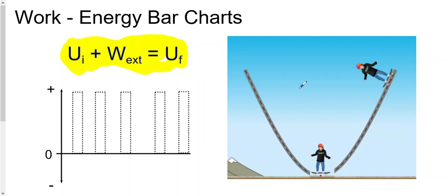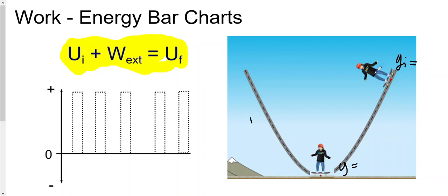Let's use this skater as our example of how work and energy are represented using a bar chart. Initially the skater is at a particular height — that's its initial height — and this is going to be its final height. We include the earth as part of the system with the skater. Why do we include earth? Because if we don't include earth, then earth does negative work, and there will be no potential energy since we use earth as our arbitrary frame of reference.